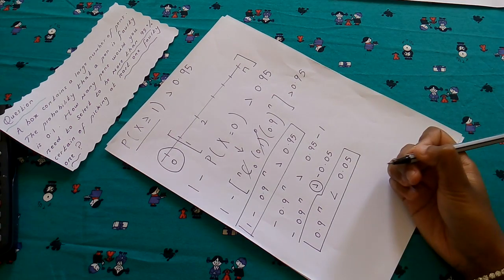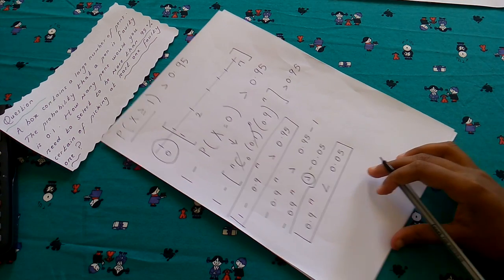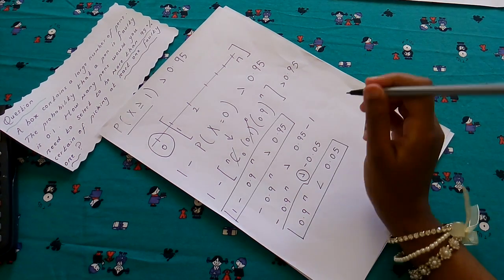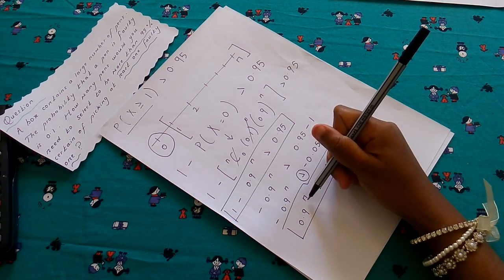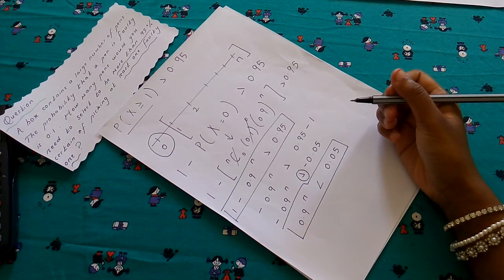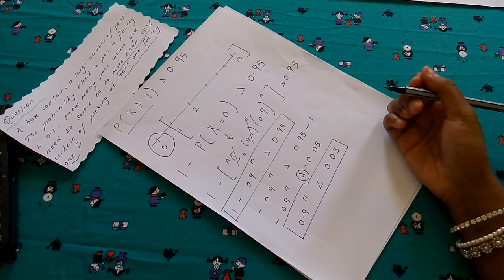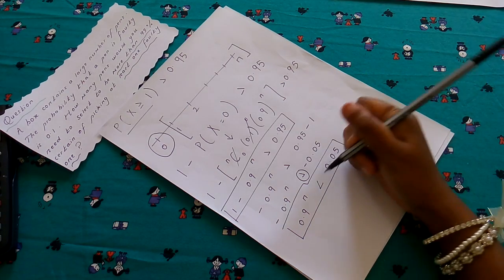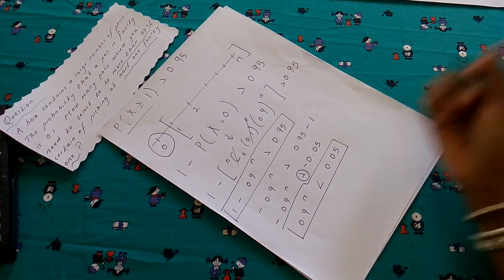Using this inequality, we need to find our n. Now from here, there are two ways of finding the unknown n: either by trial and improvement or by using logarithms. But for this question, I'm going to show you how to find the n using logarithms.